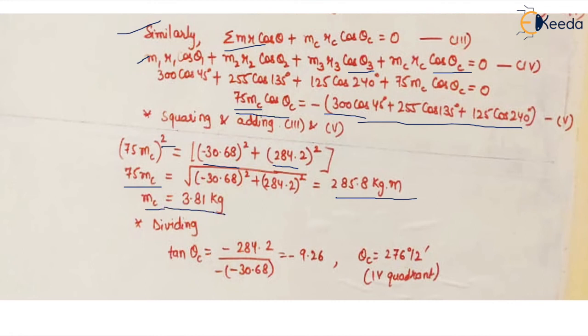That means to balance that whole system statically we need to put a mass of 3.81 kilogram at a radial distance of 75mm. But the next question is at what angle. To find the angle what we do is we divide the two equations, the one for cos theta and the other one for sin theta.